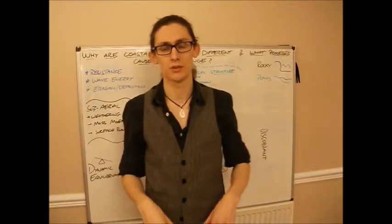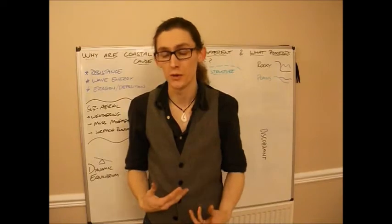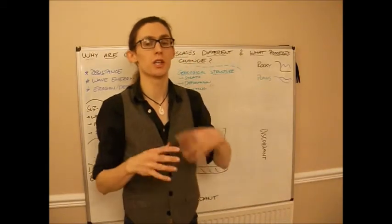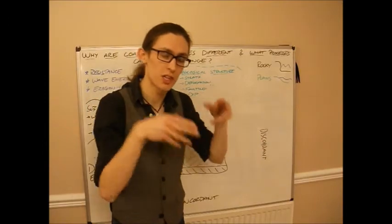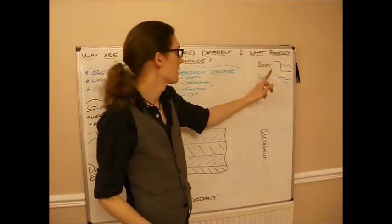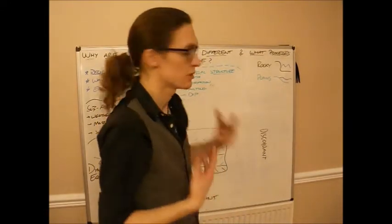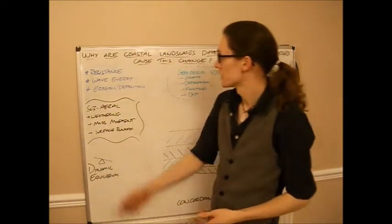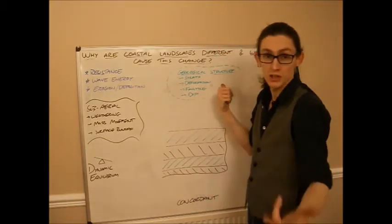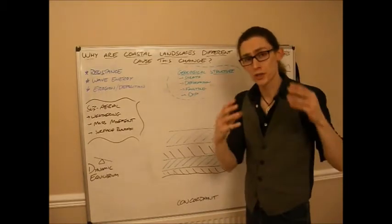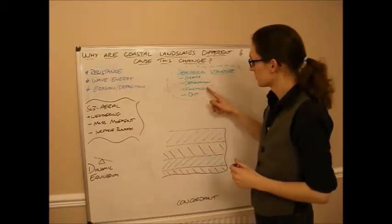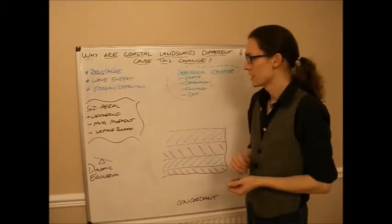In order to truly understand how these processes are occurring on coasts, we have to look at the geology, and then even further at the lithology. Geology is looking at the wider picture of the rock structure; lithology is looking at the very particular rocks. When looking at rocky and coastal plain coastlines, we need to be thinking about the geology. This can be broken down into four types of geological factors: rock strata — bands of rock — whether they've been deformed, faulting, and dip.